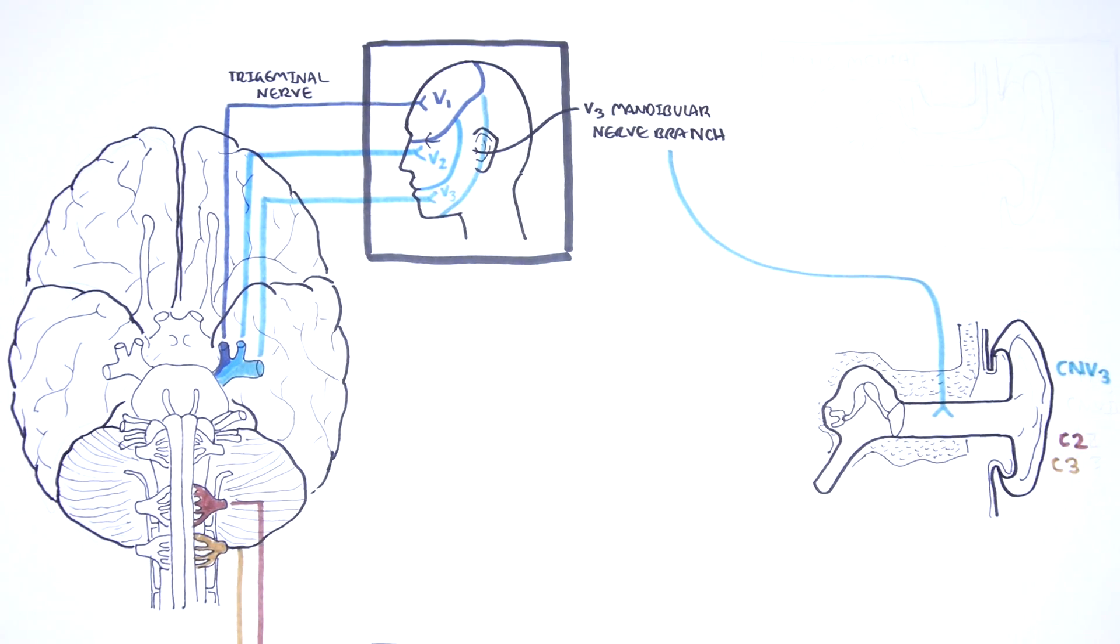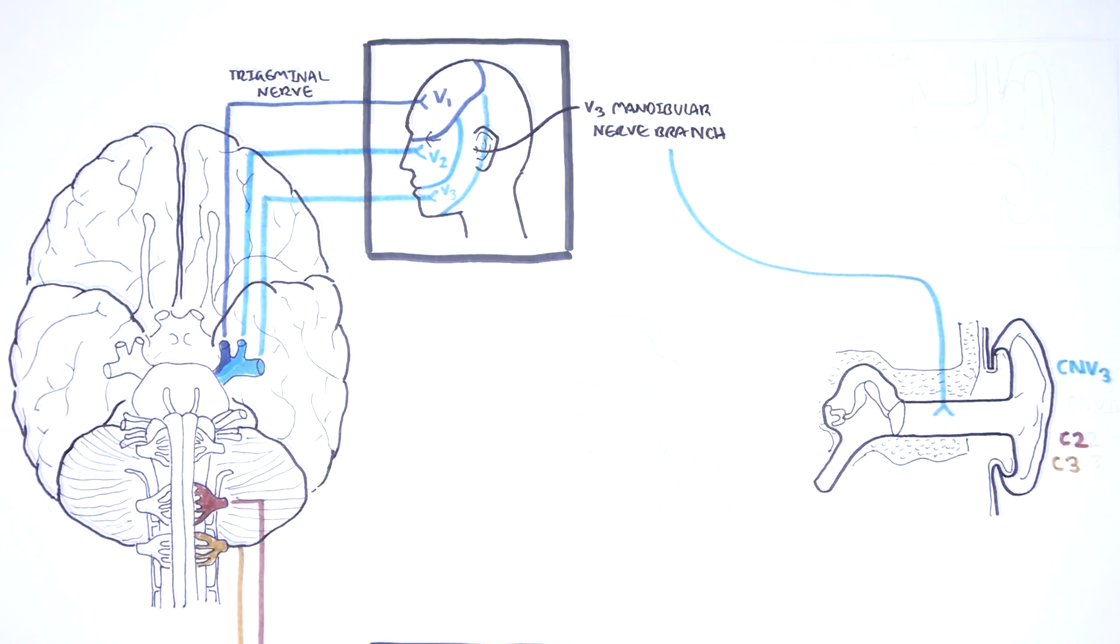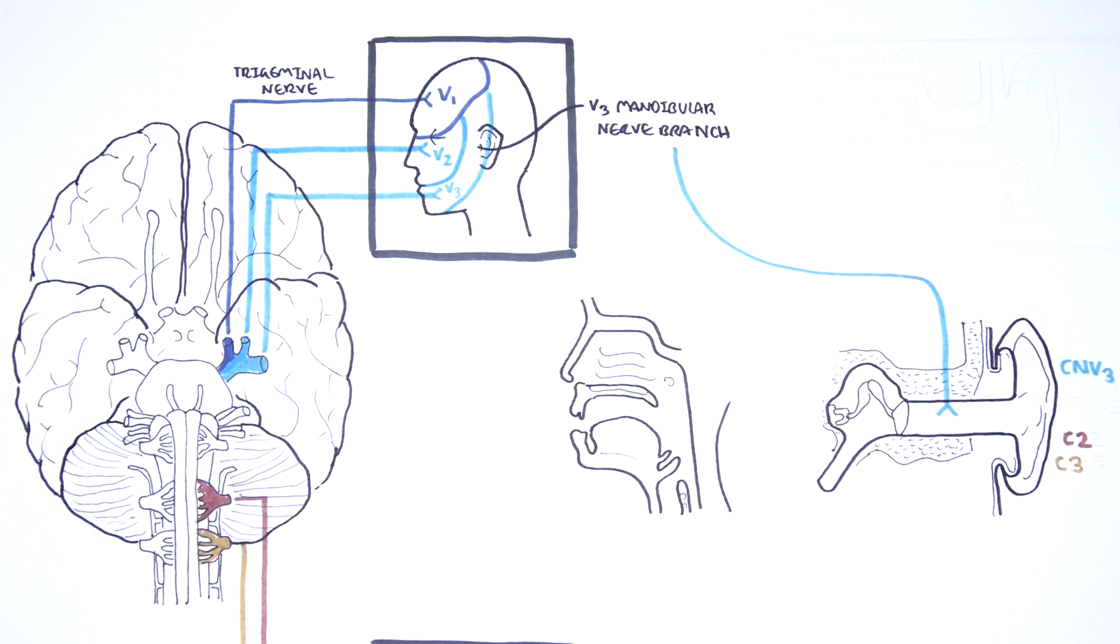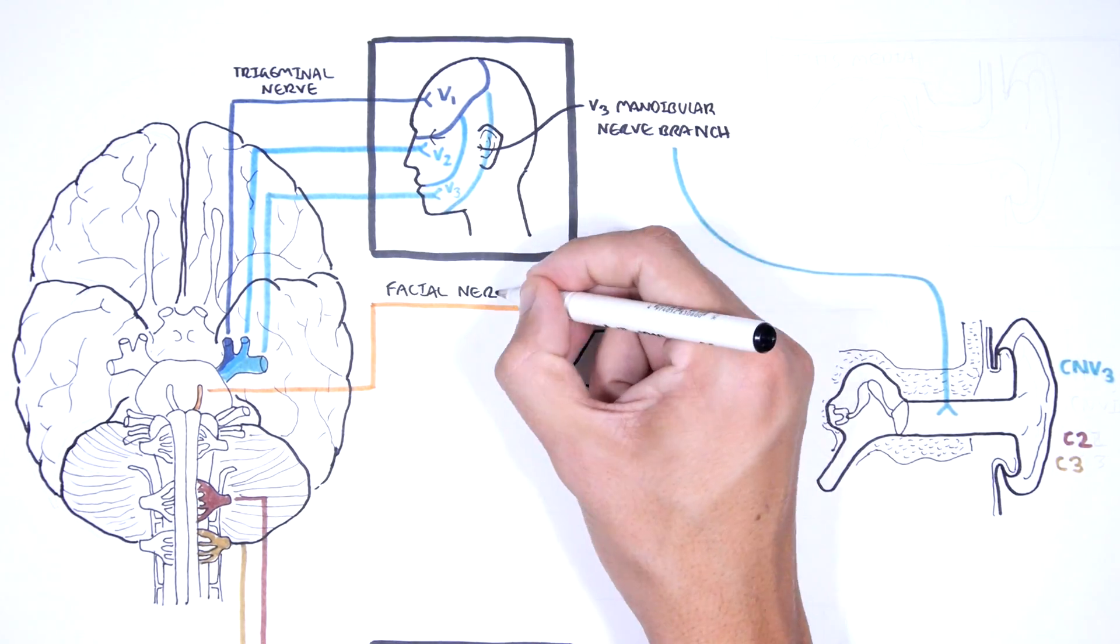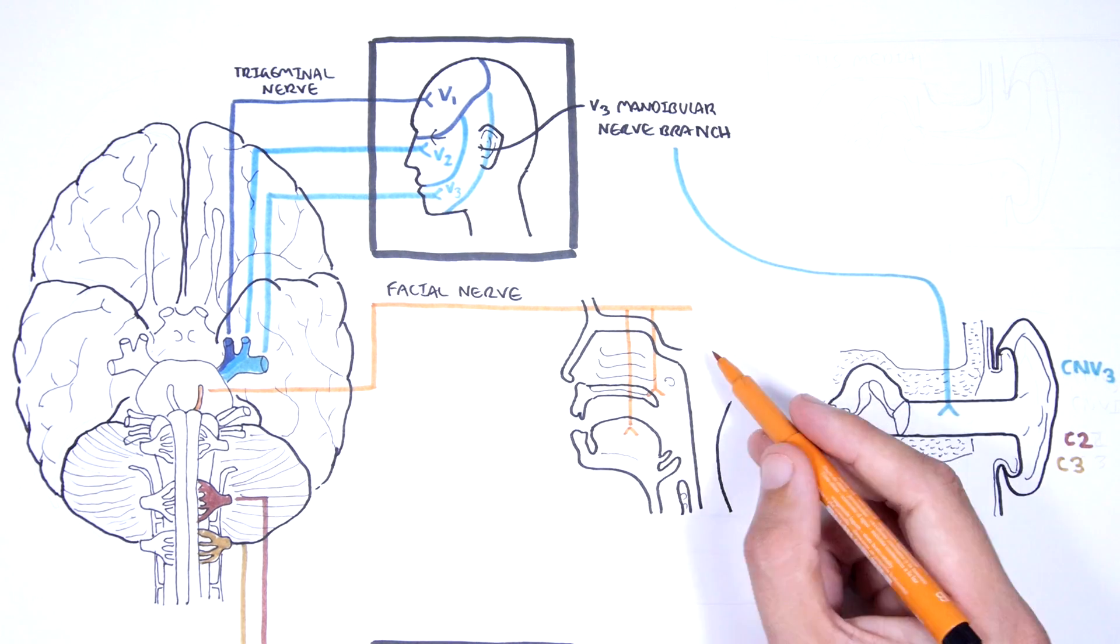Another nerve that also supplies the external ear is the facial nerve. Now the facial nerve is cranial nerve number seven. It has an important sensory role in special taste sensation to the anterior two thirds of the tongue.